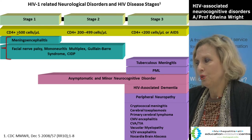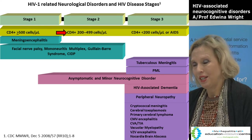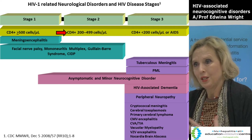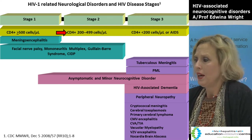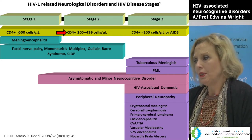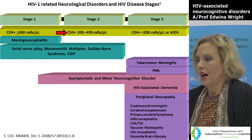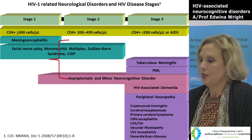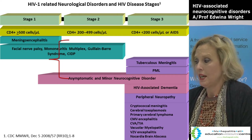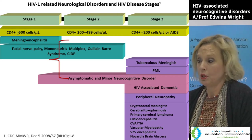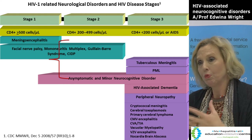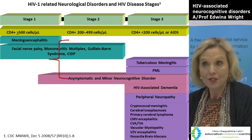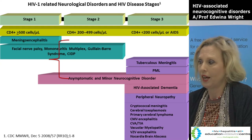In stage 2, if the individual hasn't received any antiretroviral therapy, their CD4 cell counts will decline over time and individuals become a little bit more vulnerable to other neurological disorders. Asymptomatic and minor neurocognitive disorders can be experienced by individuals with reasonably high CD4 cell counts, and these are some of the features or components of HAND.